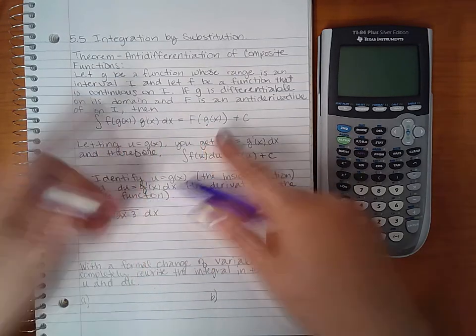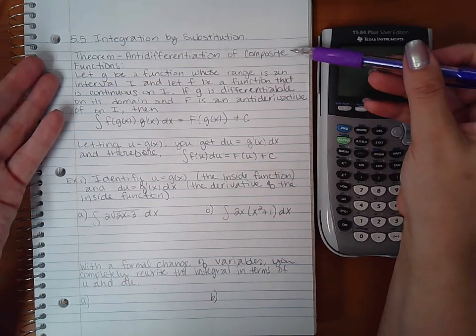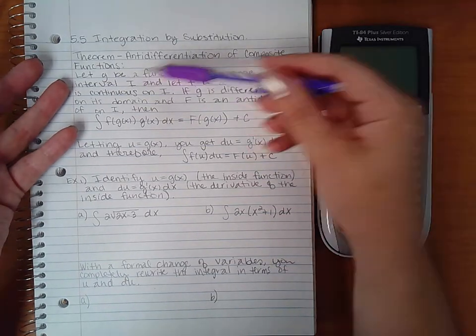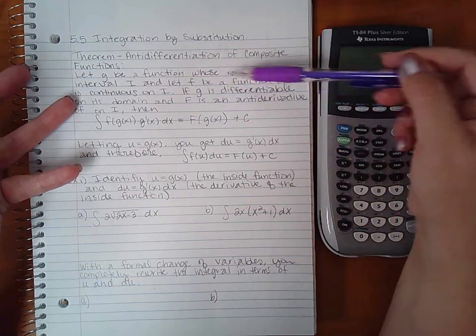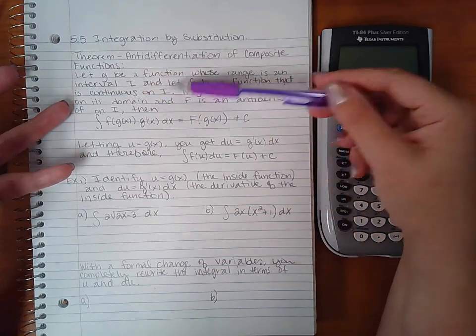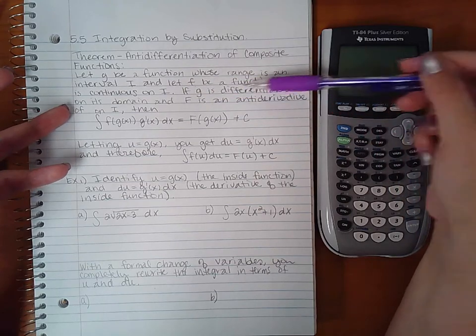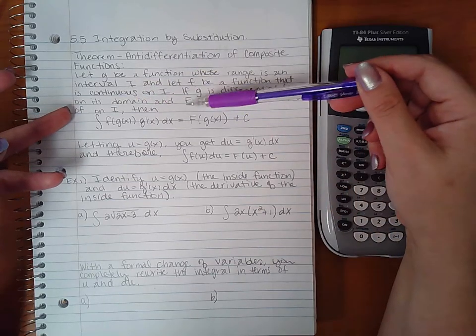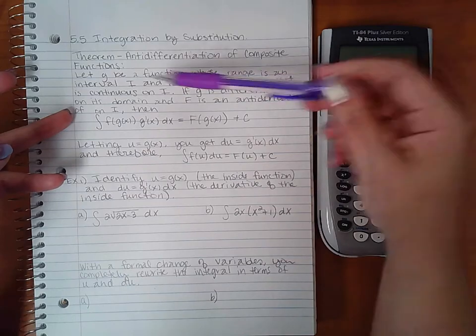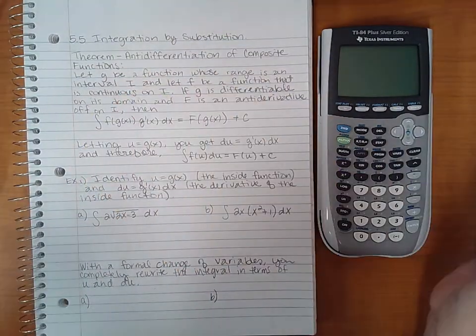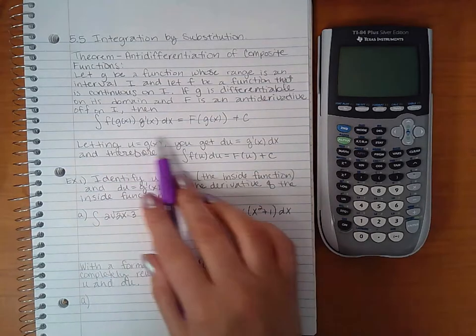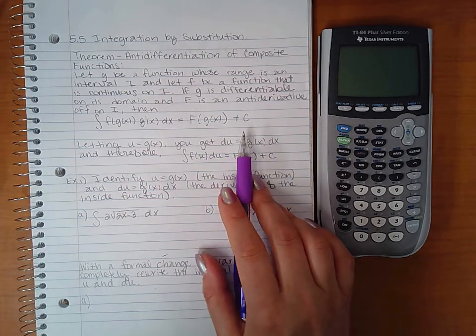The theorem of anti-differentiation of composite functions says that if g is a function whose range is an interval I and f is a function that is continuous on I, if g is differentiable on its domain and capital F is an anti-derivative of little f on I, then this integration holds.